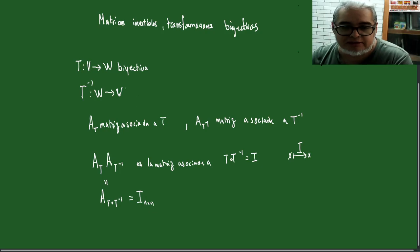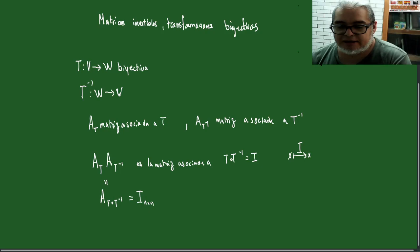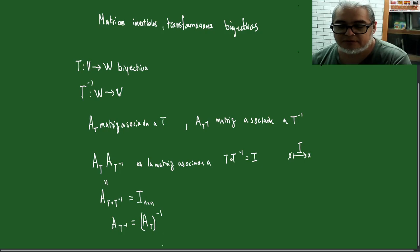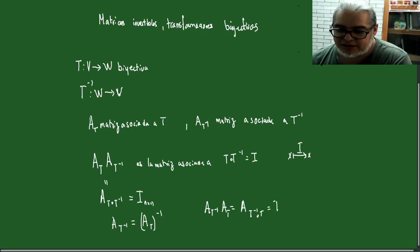Donde este espacio vectorial tiene dimensión N, y en principio esperaríamos que esté también. Entonces, esa es la idea de la matriz inversa. A la A_{T inversa} le vamos a llamar por notación A_{T inversa}. Esto pasa de este lado, pero también debería pasar del otro lado: que A_{T inversa} multiplicada por A_T es la matriz asociada a la transformación T inversa seguida de T, que es la identidad N×N.